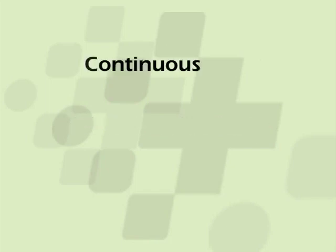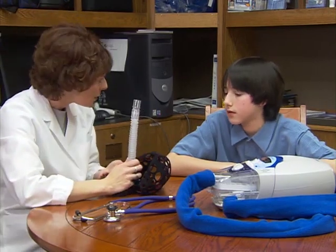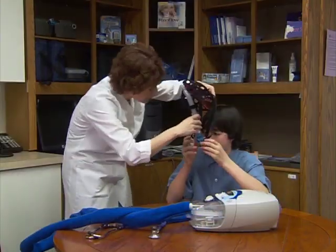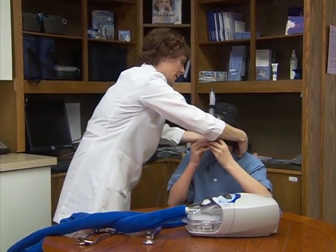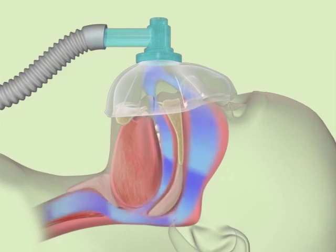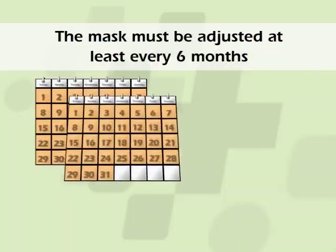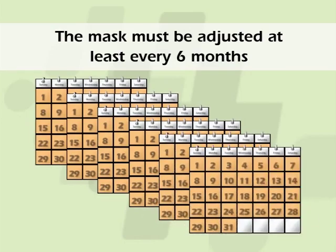Another treatment option is called continuous positive airway pressure, or CPAP. CPAP is commonly prescribed if a child cannot have surgery or if a tonsillectomy failed to work. CPAP is an air pressure device which involves wearing a mask over the nose and mouth during sleep. The CPAP device does not breathe for the child, but rather keeps the airway open so the child can breathe more easily. Some children do not tolerate CPAP well and are bothered by wearing a mask during sleep. For children who use CPAP, frequent follow-up visits are important because children grow quickly, and the mask must be adjusted at least every six months.